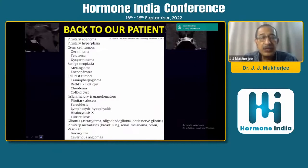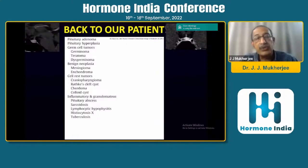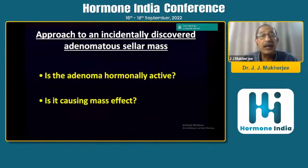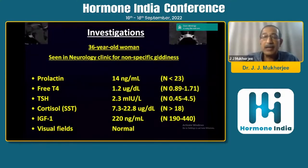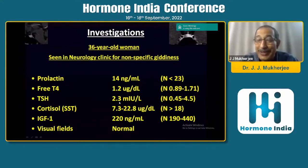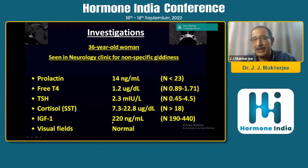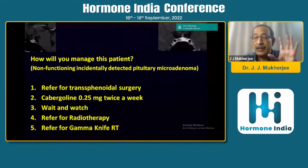Going through the differential systematically — ruling out vascular lesion, metastasis, pituitary abscess, sarcoid, chordoma, meningioma, germinoma, teratoma, pituitary hypoplasia — this is a pituitary adenoma. Is it causing mass effect? Look at the hormones: prolactin is normal, thyroid is normal, cortisol was a little low so she had a short Synacthen test — she clearly passed with no hypoadrenalism. IGF-1 is normal, visual fields are normal as expected for a microadenoma. The adenoma is not hormonally active.